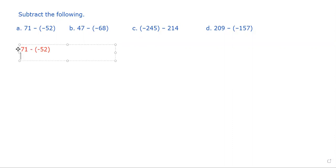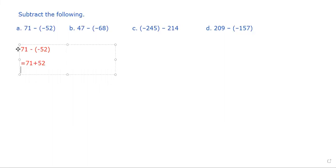You can see here there is a minus sign outside of the bracket and a minus sign inside of the bracket along with 52. When we remove the bracket around negative 52, these two negative signs will turn into a positive sign. So instead of two negative signs, we write a plus sign, giving us 71 plus 52. Now we simply add 71 and 52.